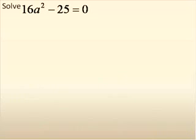16a squared minus 25 equal to zero. We are going to solve this. We do not have a product. So, what we need to do is we need to factor it. Everything is on one side equal to zero, so we do not have to do anything as far as that goes, but we do need to factor it. This is the difference of perfect squares.